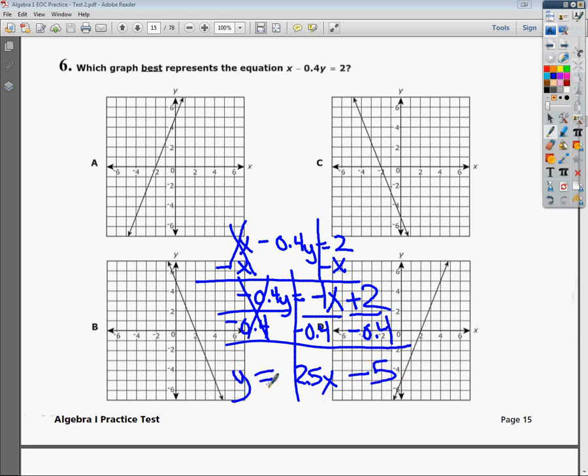So y equals 2.5. I'm going to write it out a little bit bigger underneath it. 2.5x minus 5. Now this part should tell me where it starts. This tells me it's positive slope. So I know it can't be c or b. So I can just eliminate those two things.